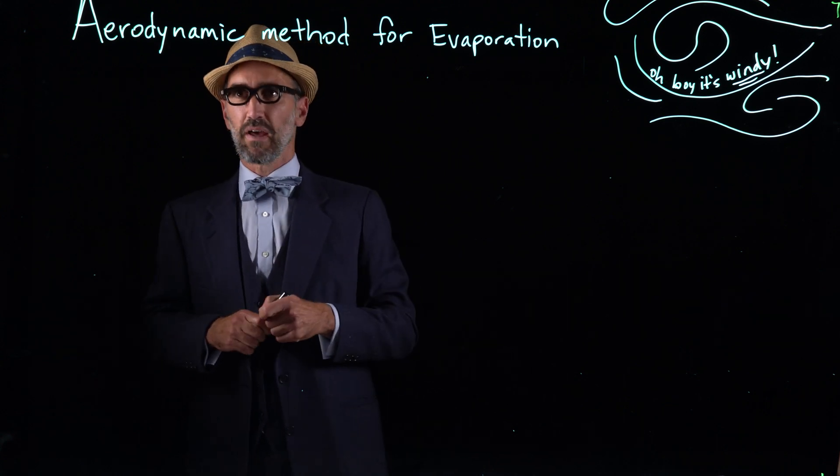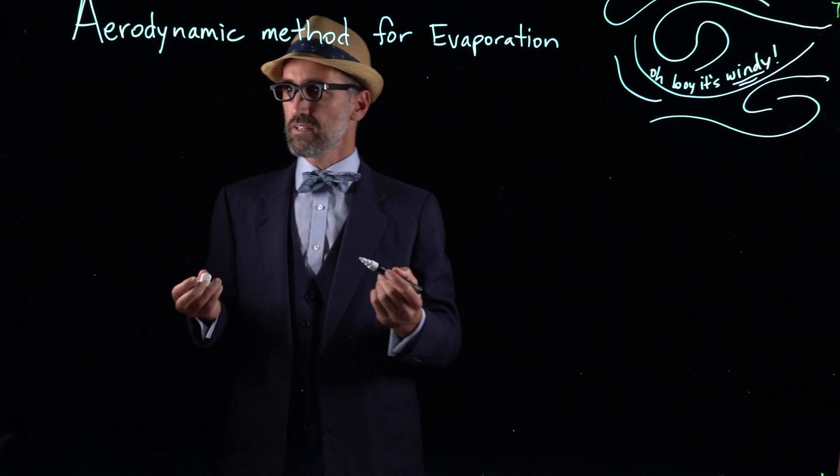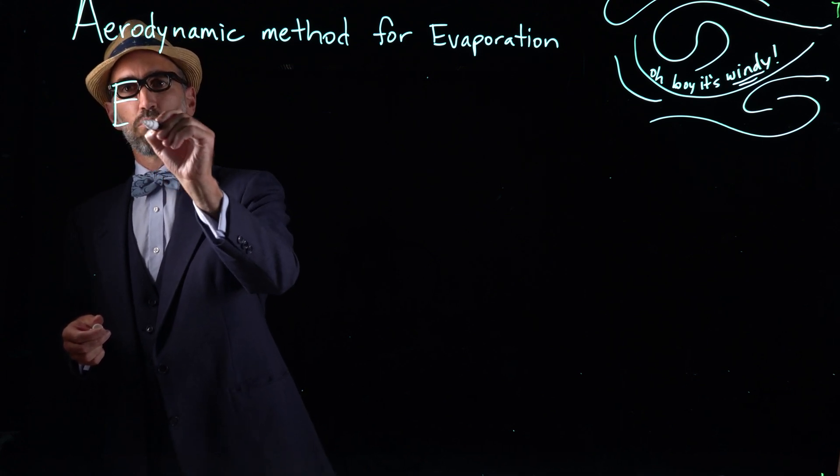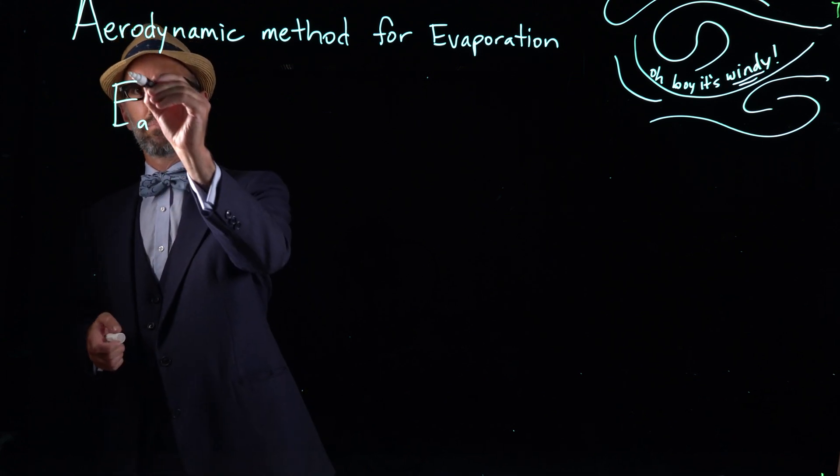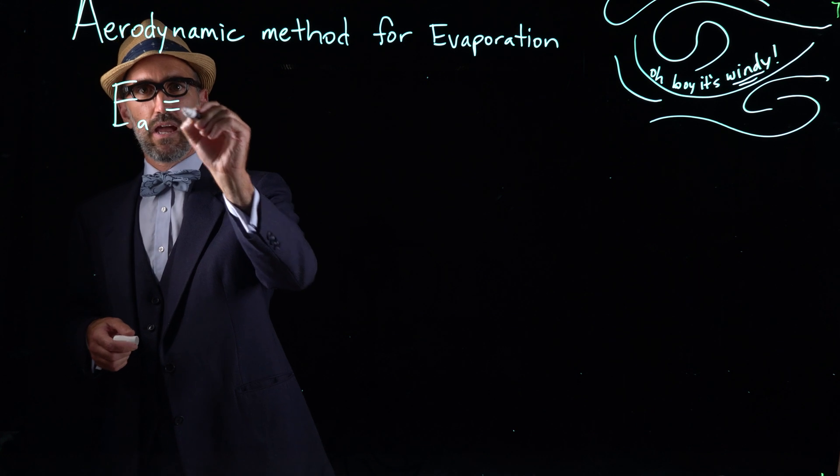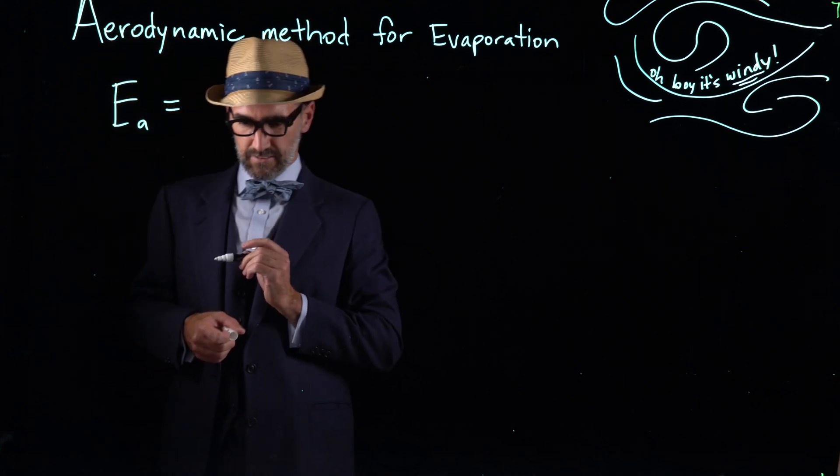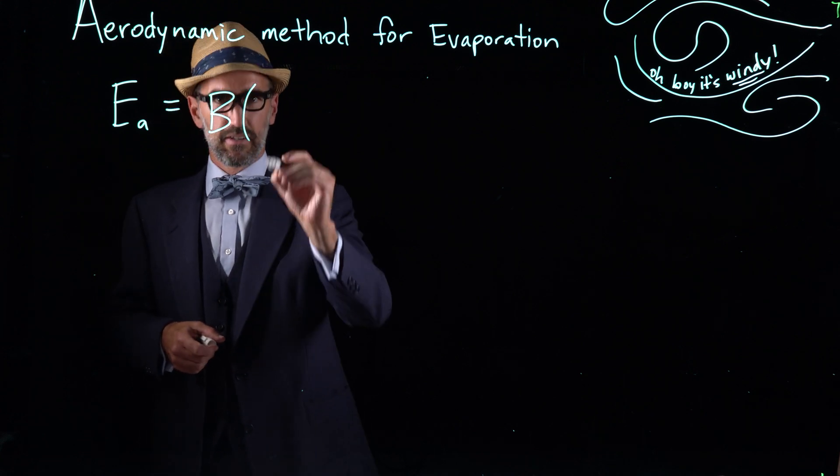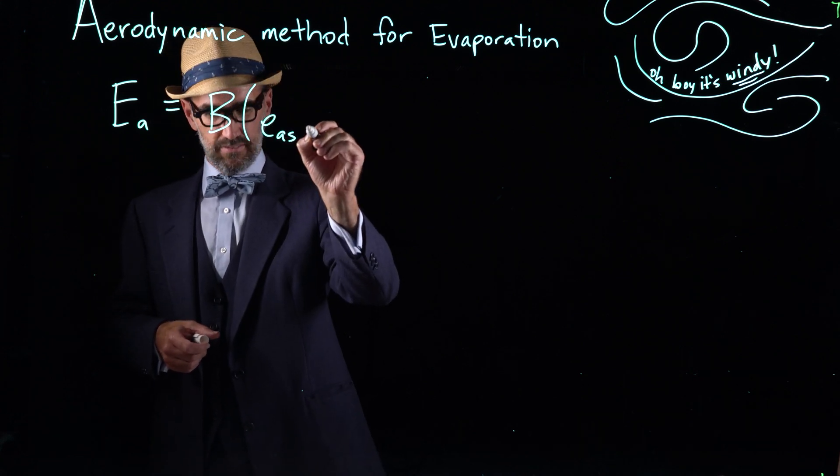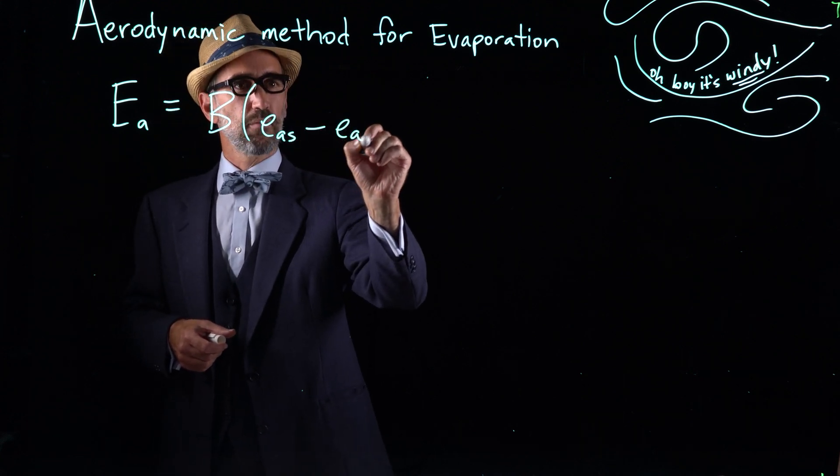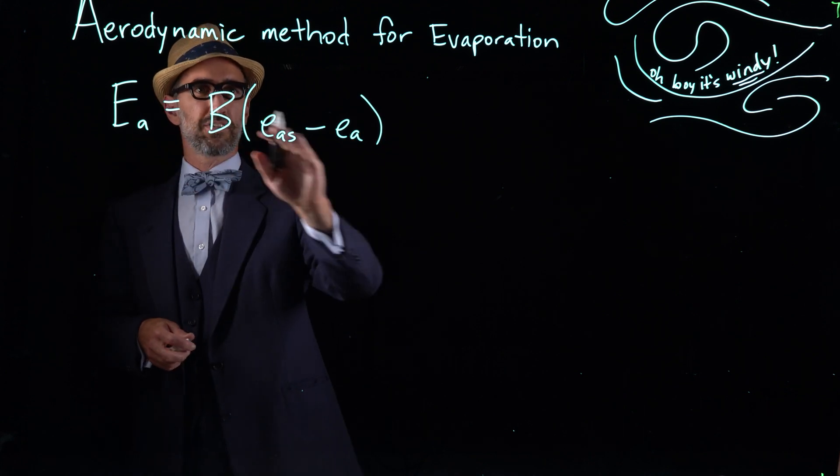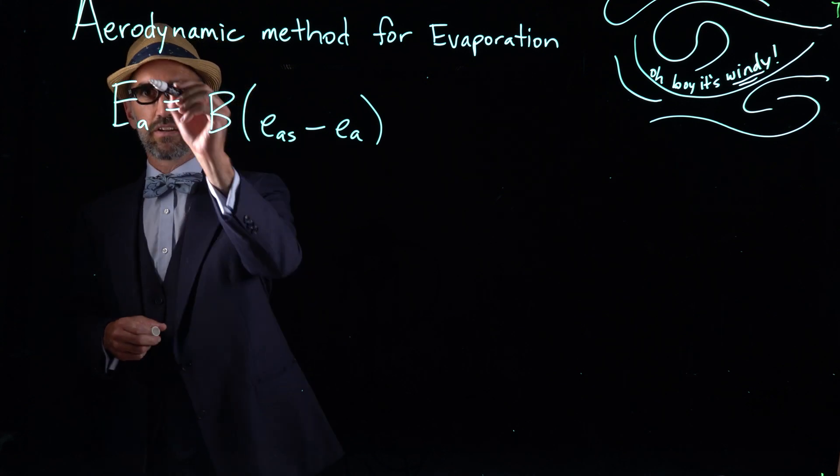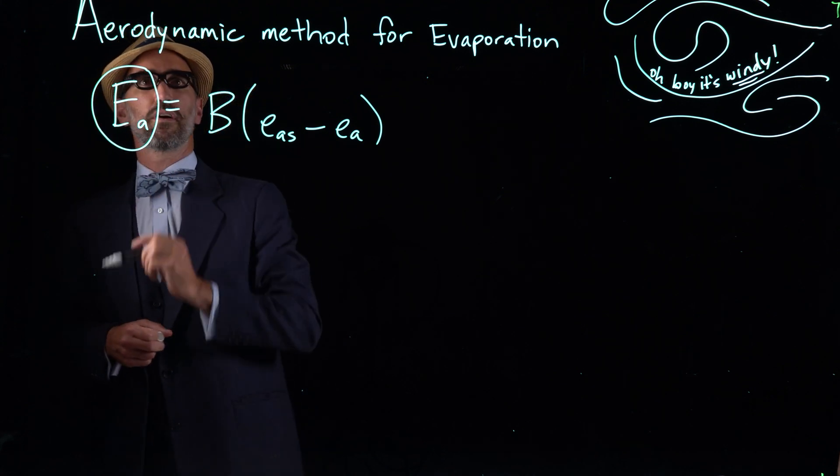So the aerodynamic method has a relatively simple equation at its root. The rate of evaporation in this one is called big E sub A, and big E sub A is B bracket E sub AS minus E sub A. I'm going to define what each of these variables are and how to calculate it. But first, just to start, this is what we're aiming for, the rate of evaporation.